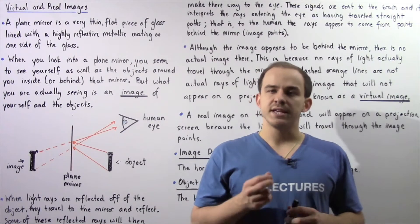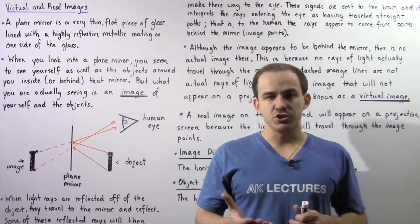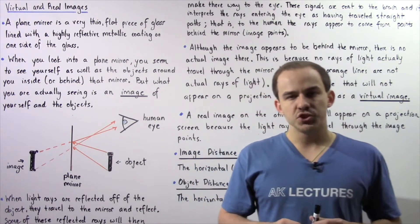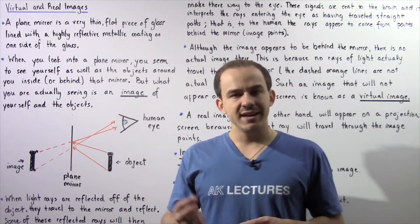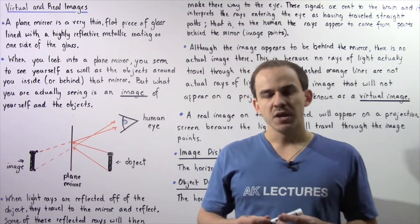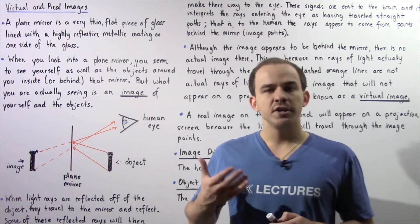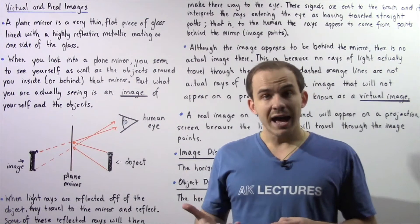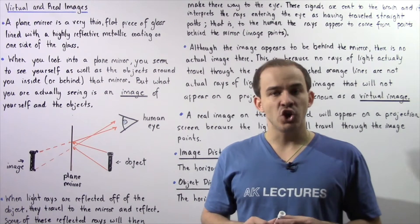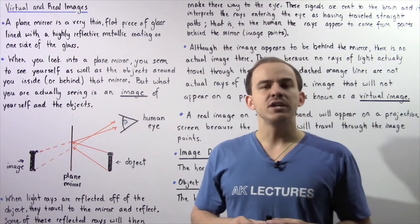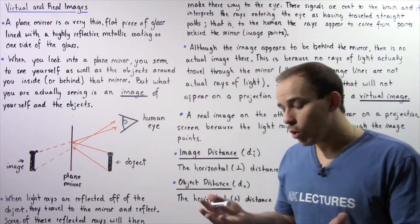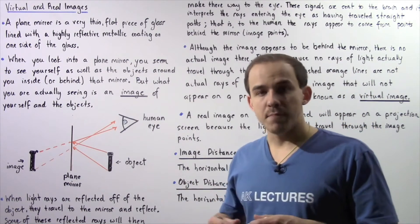In this lecture, we're going to discuss a concept known as the image — specifically virtual as well as real images. Before we define what an image is, let's define what a plane mirror is. A plane mirror is essentially a very thin, flat glass lined with a highly reflective metallic coating on one side. A plane mirror is the mirror one would find inside a bathroom.